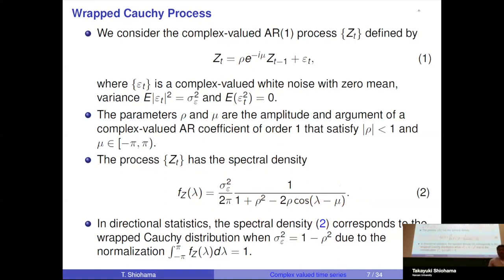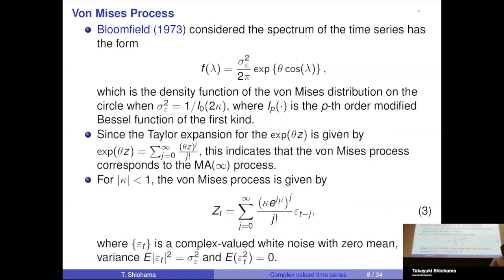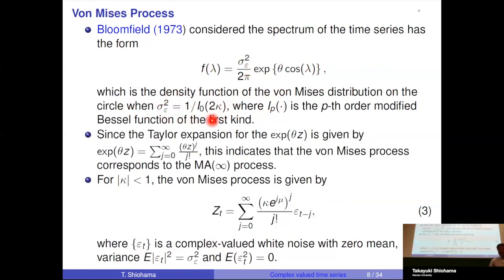In directional statistics, this spectral density corresponds to the wrapped Cauchy distribution when σ²_y equals (1 - ρ²). Similarly, we can introduce a model whose spectral density corresponds to the von Mises distribution on the circle, where σ²_ε takes appropriate values and I₀ is the modified Bessel function of the first kind of order zero.